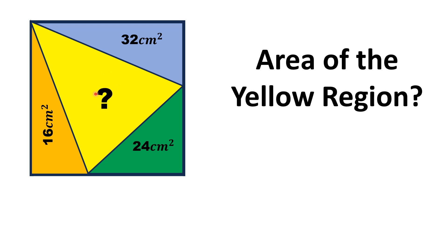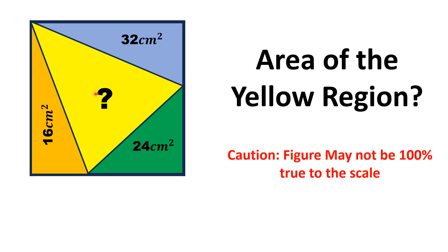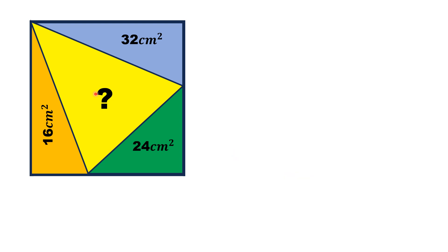It is important to mention that the figure may not be 100% true to scale. Let us move towards the solution. Let the side length of the square be 'a', so all sides of the square have length 'a'. Let the leg of the orange triangle be 'B', then this length is equal to a minus B.